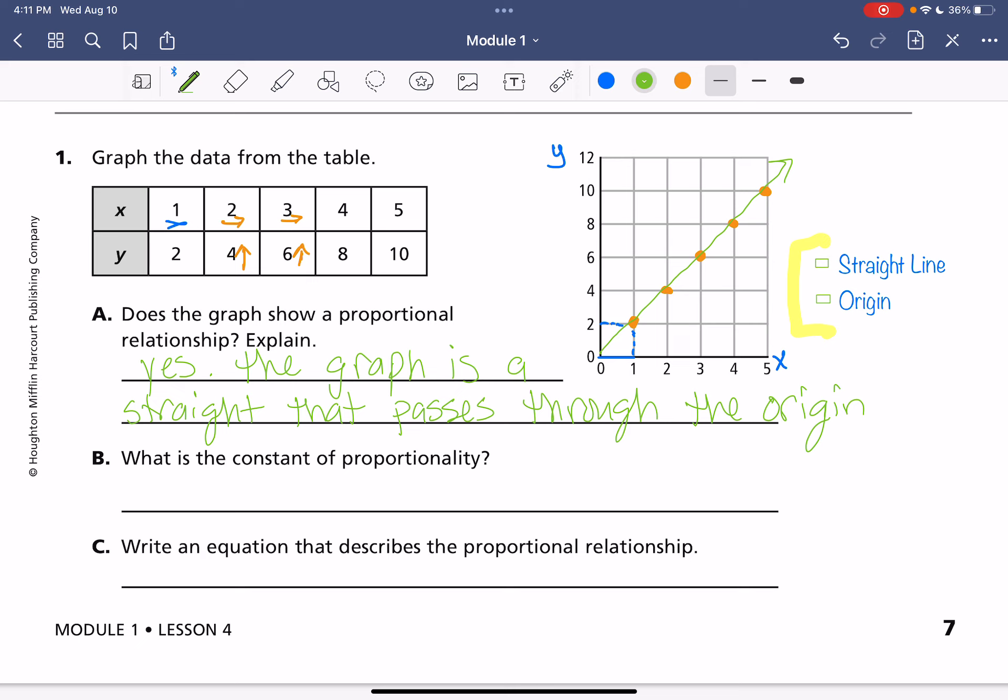And then the constant of proportionality. Again, that is our k equals y over x. And you can use any point. Any one of these points would work. I'm going to pick this point here. So my y value is 8, that's going to go in my numerator. My x value is 4. I can simplify that. 4 goes into both of these numbers. 4 goes into 8 twice. 4 goes into itself once. So k is 2. Our constant of proportionality, our rate of change is 2.